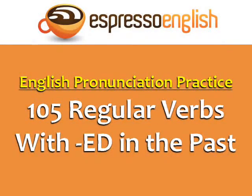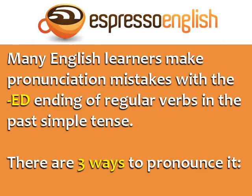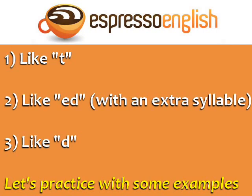English Pronunciation Practice: 105 Regular Verbs with ED in the Past, from EspressoEnglish.net. Many English learners make pronunciation mistakes with the ED ending of regular verbs in the past simple tense. There are three ways to pronounce ED in English: like T, like ED with an extra syllable, and like D.